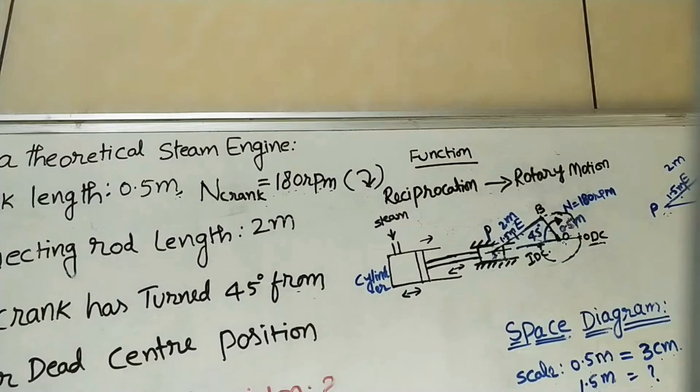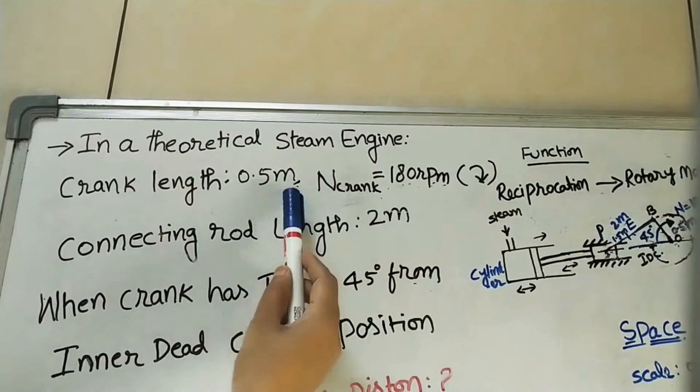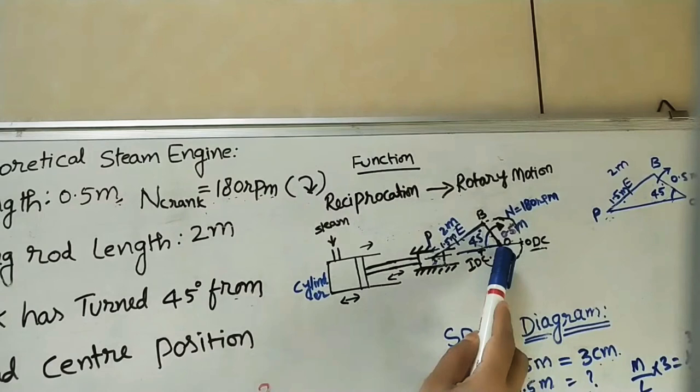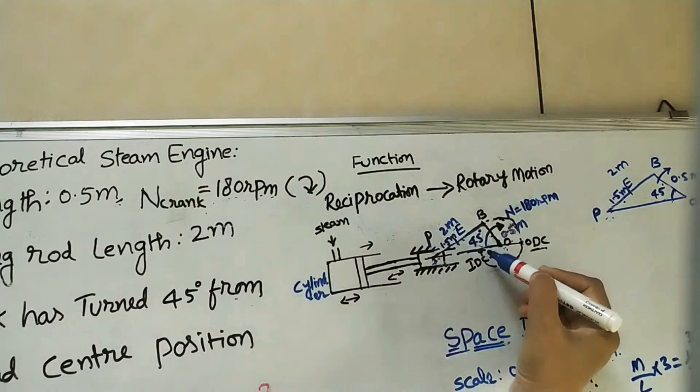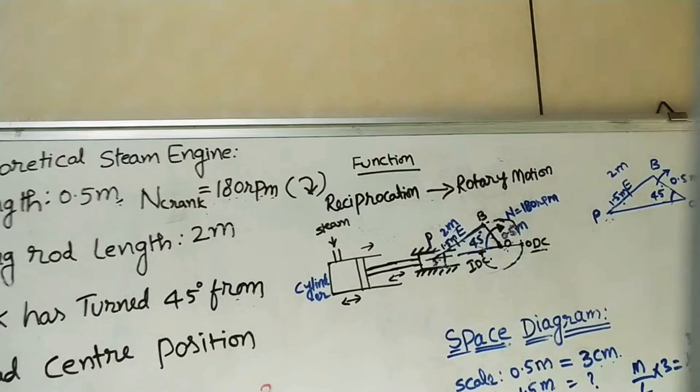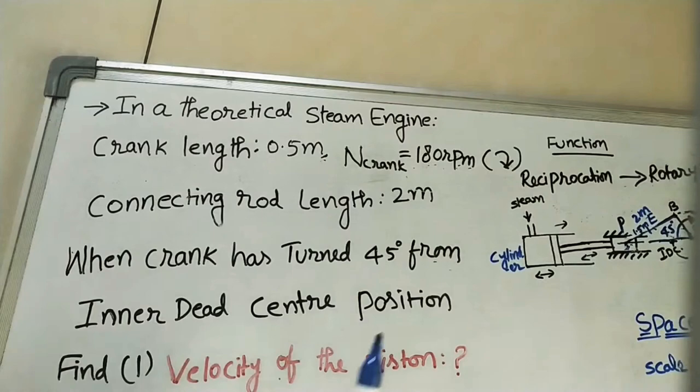OB is the crank. Always remember, the crank length is less compared to the other links. The crank length given is 0.5 meters. I am marking it roughly — just do the OB crank here. What is the speed of this crank? It is 180 RPM, given as clockwise. N equals 180 RPM. I am marking alphabet OB for the crank.